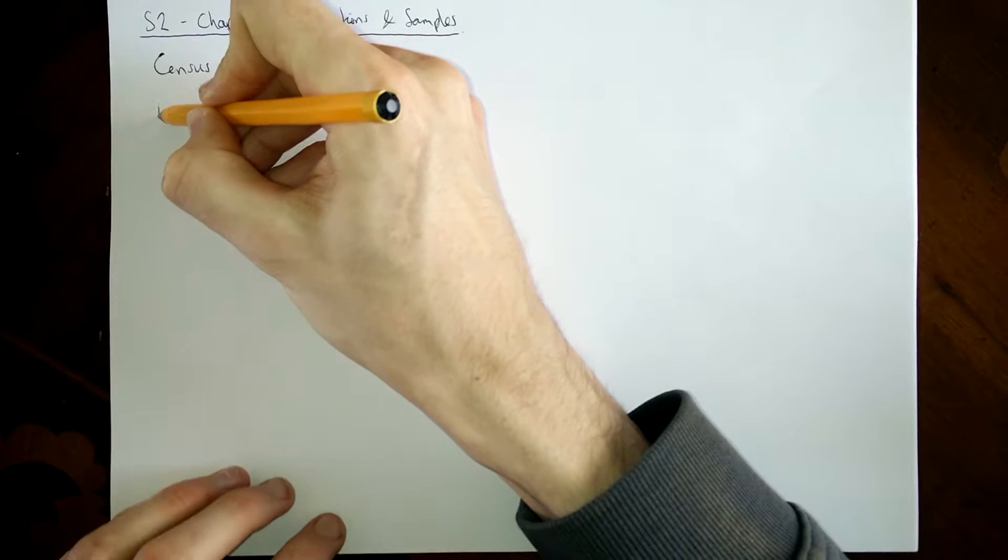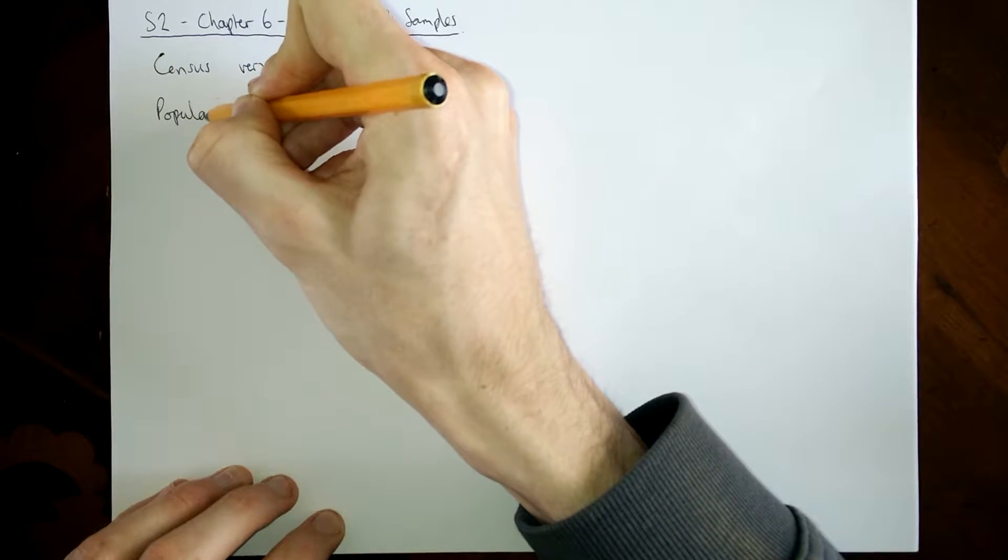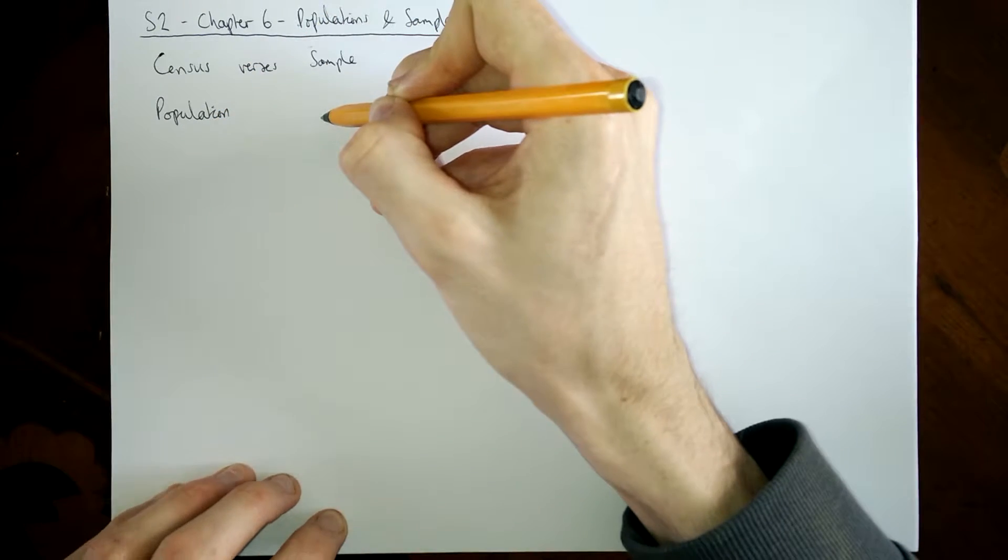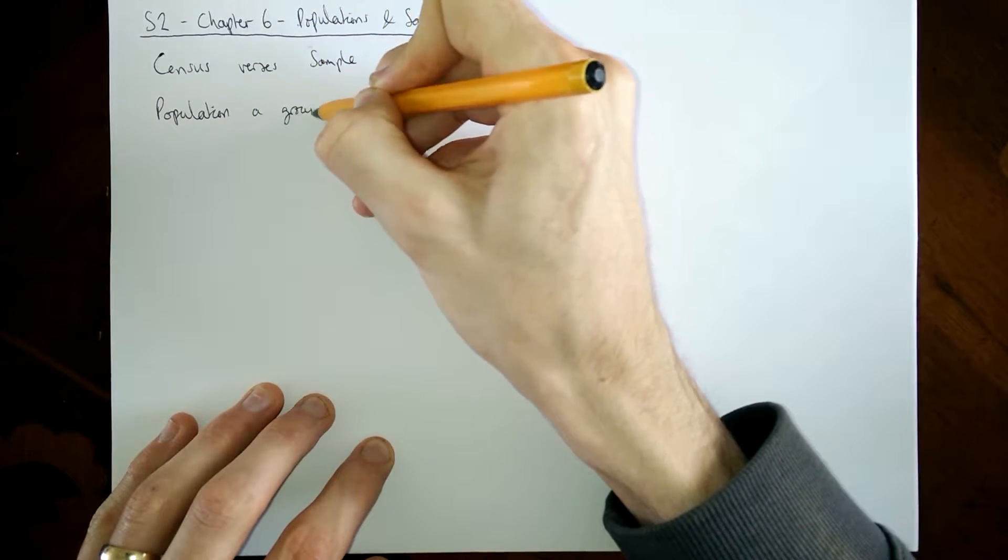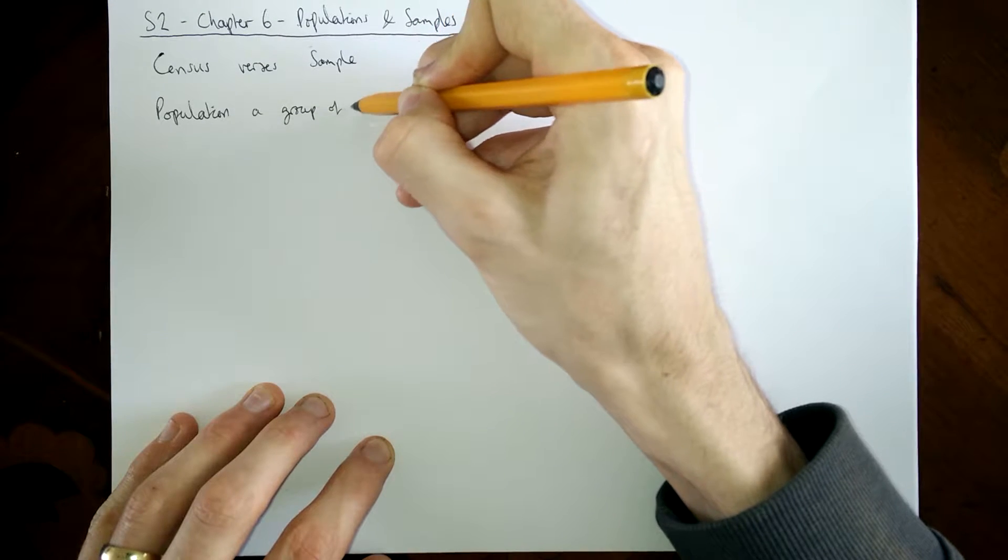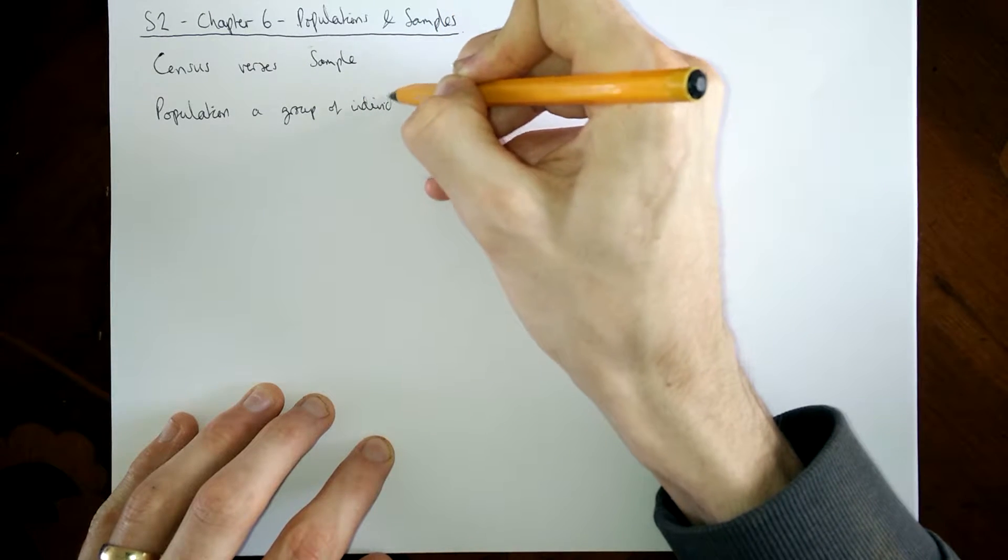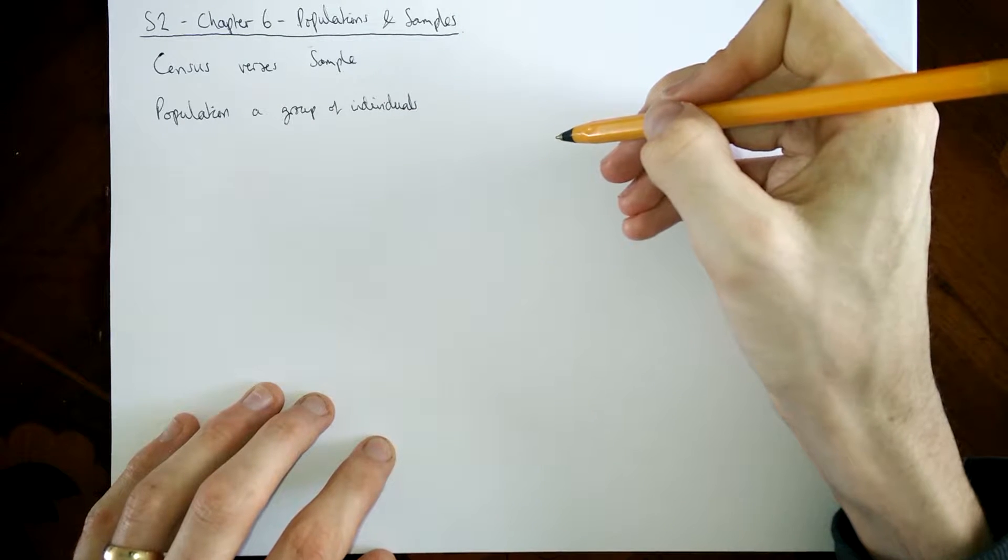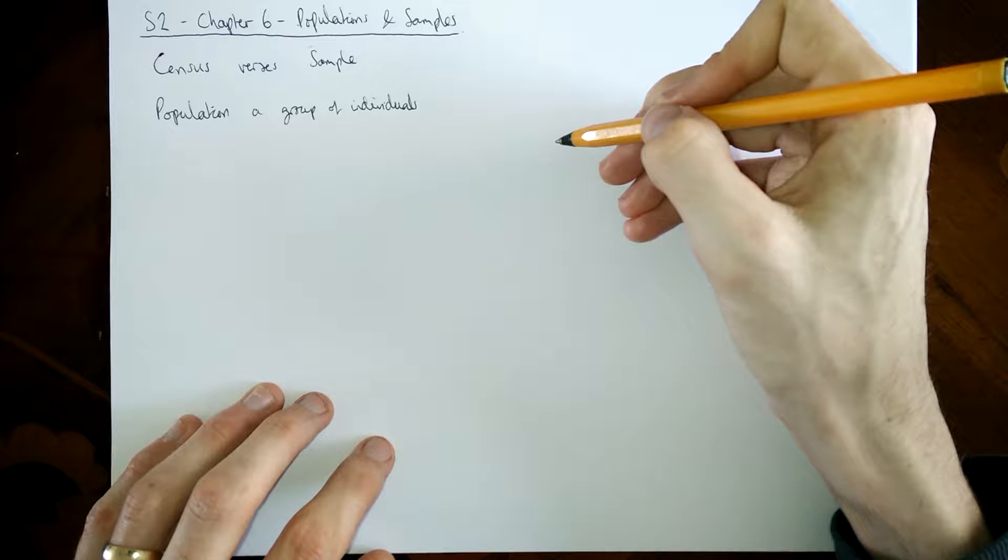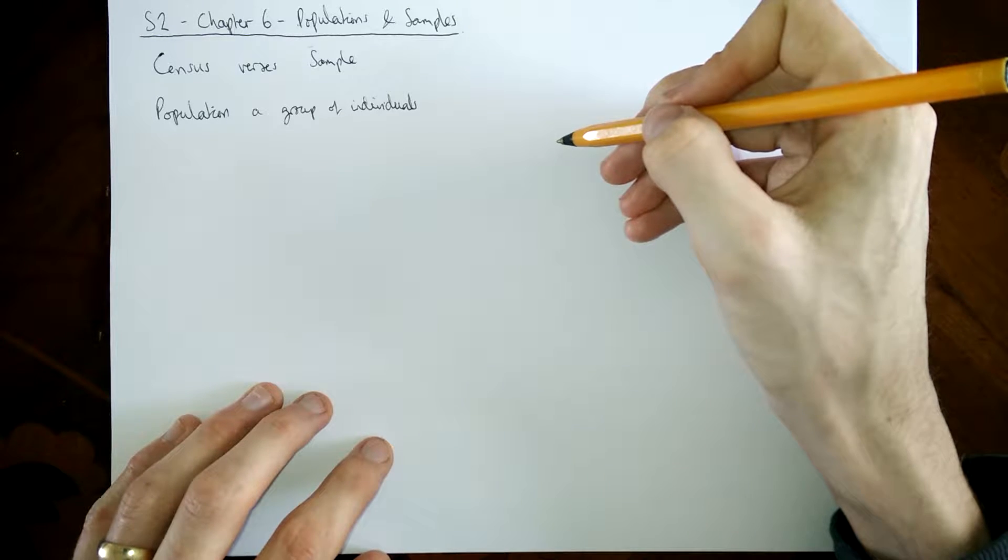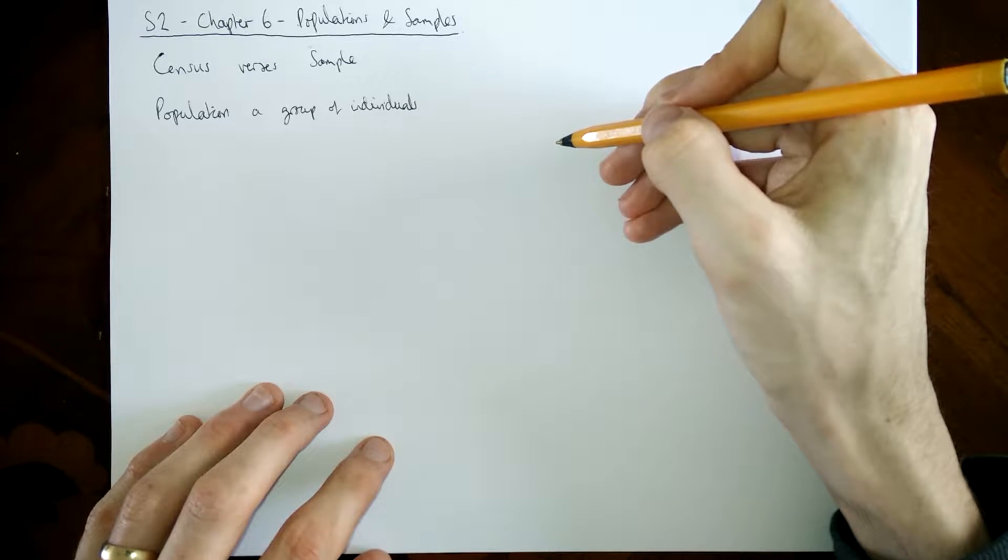The first word is population. So population is a group of individuals. Now these individuals may be people or maybe inanimate objects. They could be TVs or they could be all the elephants in Africa. They could be anything you like.